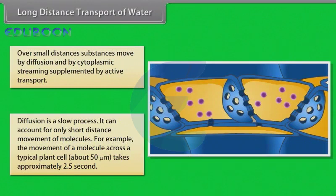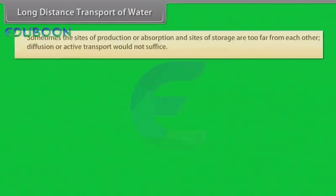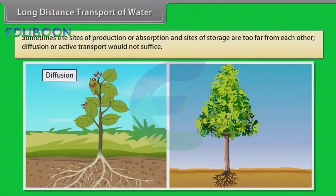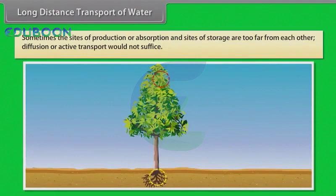Some trees are up to 50 feet tall. So think how many years it would take for the movement of molecules over a distance of 25 to 30 feet within a plant by diffusion alone. Sometimes the sites of production or absorption and sites of storage are too far from each other, so diffusion or active transport would not suffice.